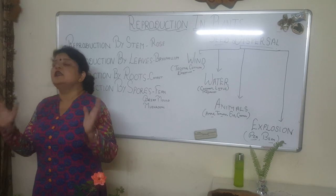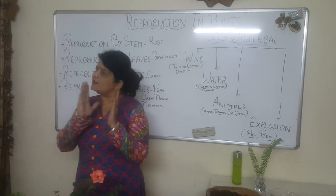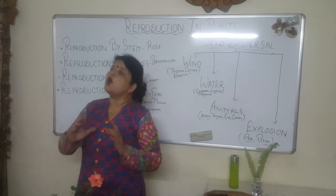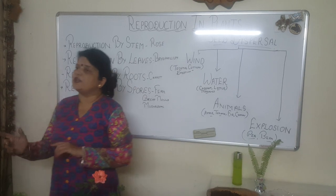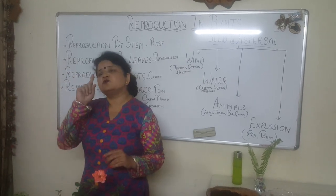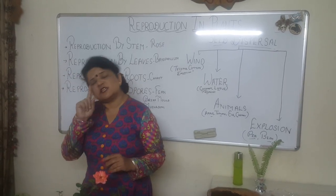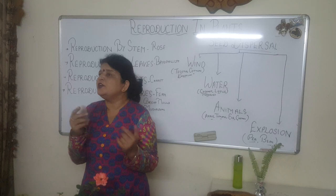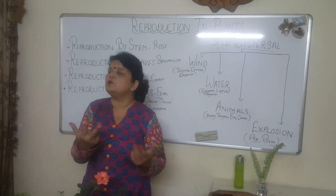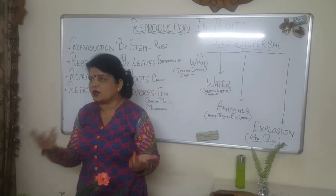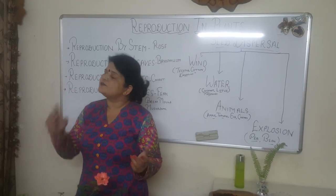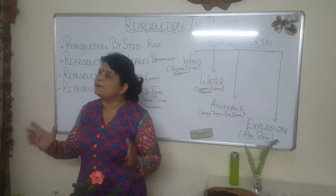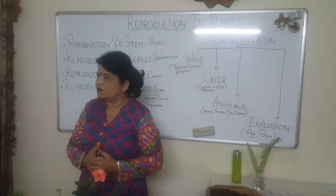When we talk about vegetative reproduction or asexual reproduction, from just one plant we can grow more plants. We do not need two plants. With the help of just one plant, we can grow as many plants as we want.